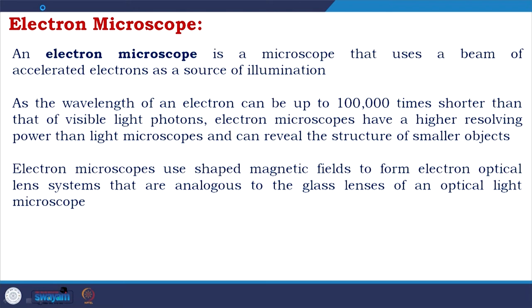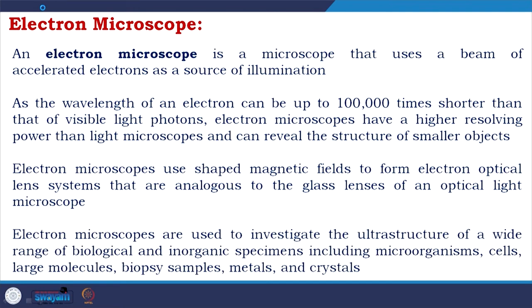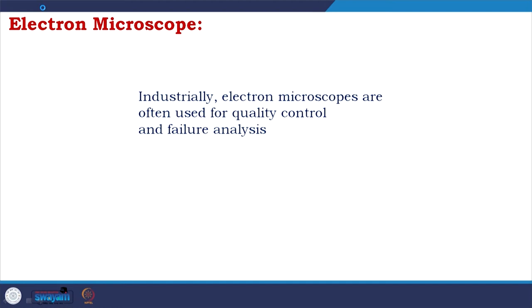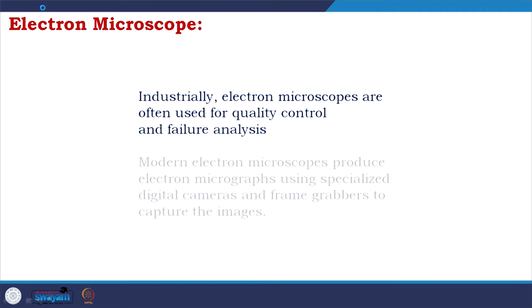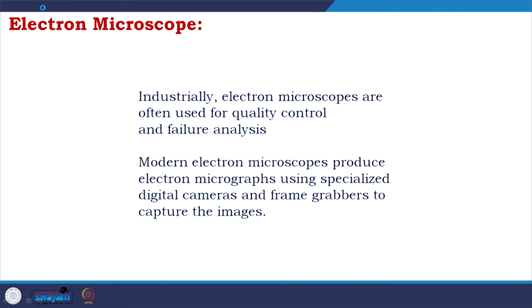Electron microscopes use shaped magnetic fields to form electron optical lens systems analogous to the glass lenses of an optical microscope. They are used to investigate the ultrastructure of a wide range of biological and inorganic specimens including microorganisms, cells, large molecules, biopsy samples, metals, and crystals. Industrially, electron microscopes are often used for quality control and failure analysis. Modern electron microscopes use specialized digital cameras and frame grabbers to capture images.